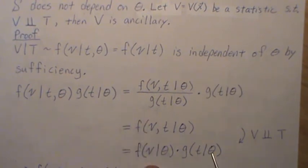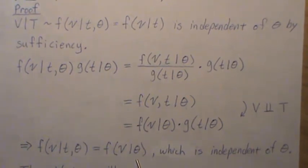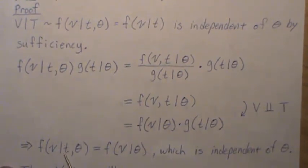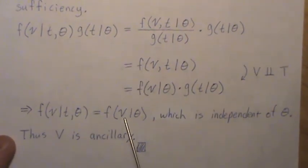But then we can divide both sides. So that implies that these two are equal, which, since t is sufficient, this is independent of theta. So that means this is independent of theta, which is independent of theta. So thus, v is ancillary, and that's what we wanted to show.